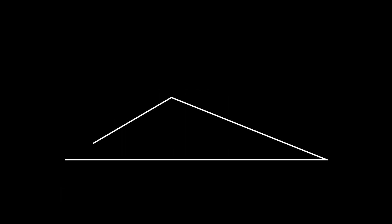Imagine we have a triangle with sides of length A, B, and C, and the angles across from the sides are labeled capital A, capital B, and capital C respectively. Drop an altitude from the vertex where angle A is to the side of length A and label it H.